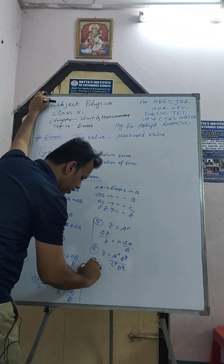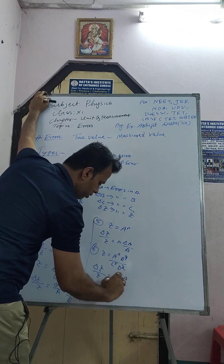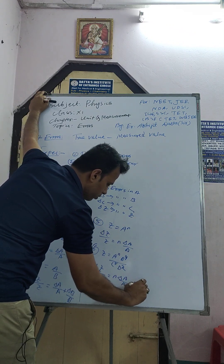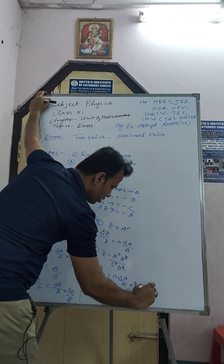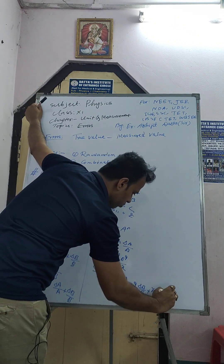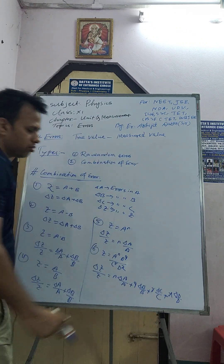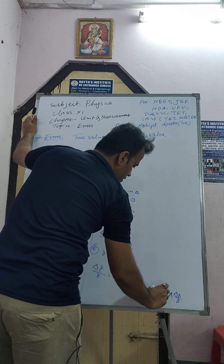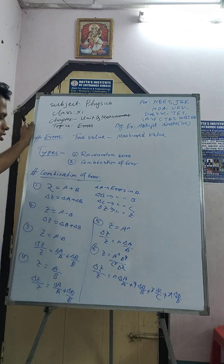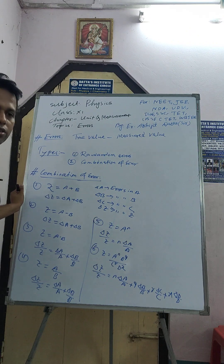Formula 6: if z equals a to the power n times b to the power q times c to the power r times d to the power x, then del z by z equals n into del a by a plus q into del b by b plus r into del c by c plus x into del d by d. These are the six formulas from combination of errors. Using these formulas we will solve some previous exam questions.